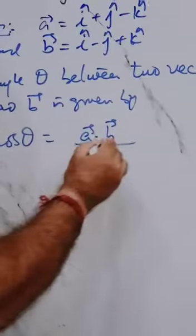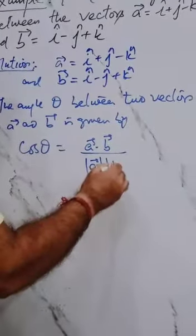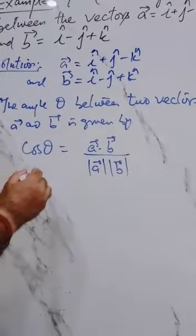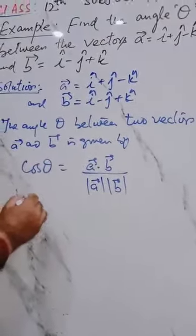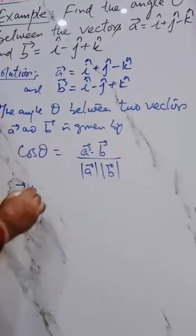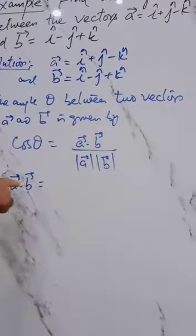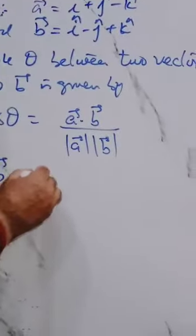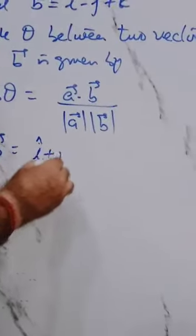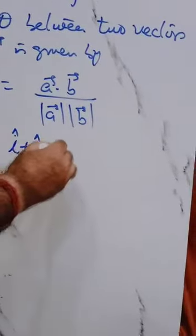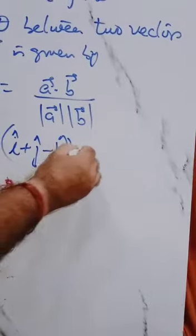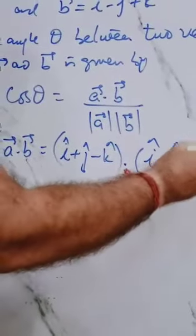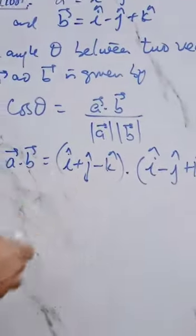So cos theta equals vector a dot vector b, upon the magnitude of vector a into magnitude of vector b. To find a dot b, we take the dot product of the two vectors: i plus j minus k, and i minus j plus k.